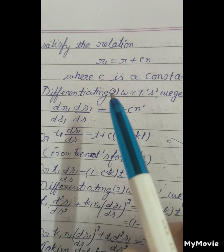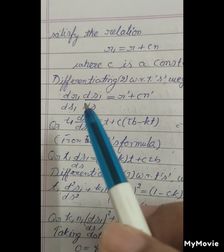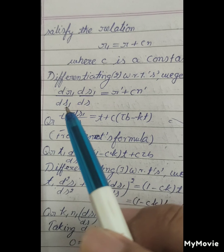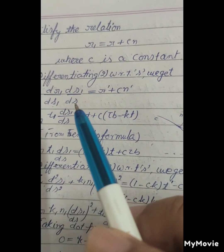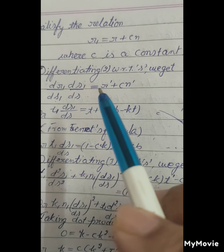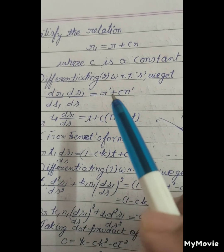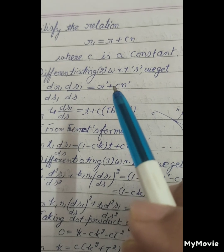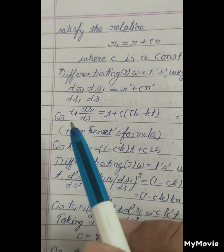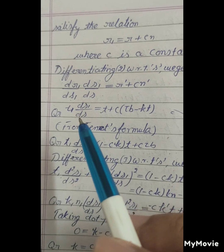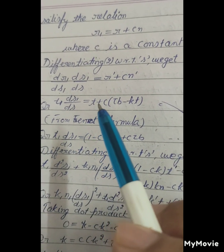Differentiating (2) with respect to s, we get dr₁/ds₁ · ds₁/ds = r' + cn', or t₁(ds₁/ds) = t + c(τb - kt) from Frenet's formula.